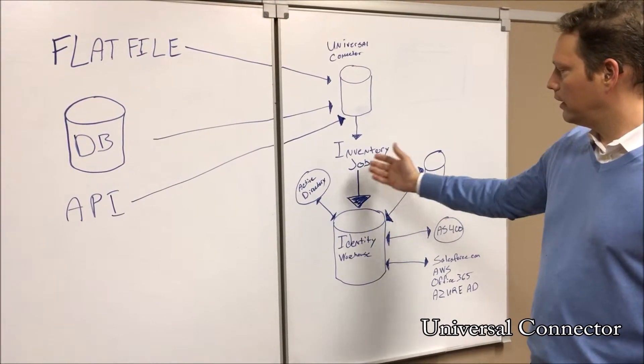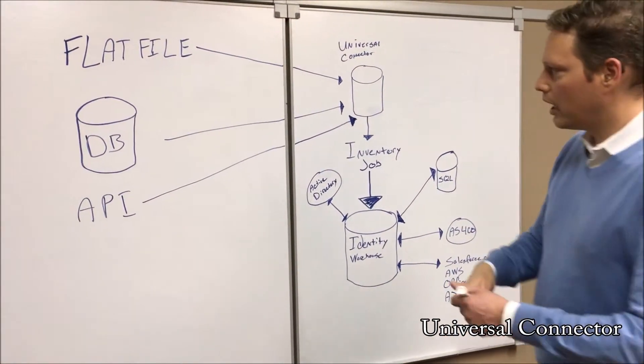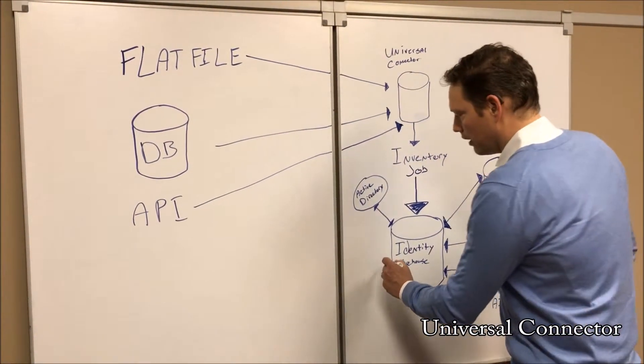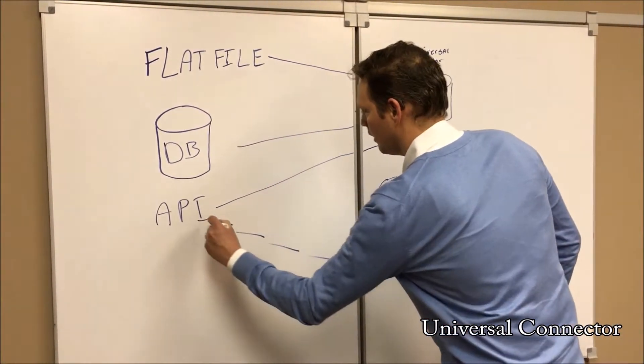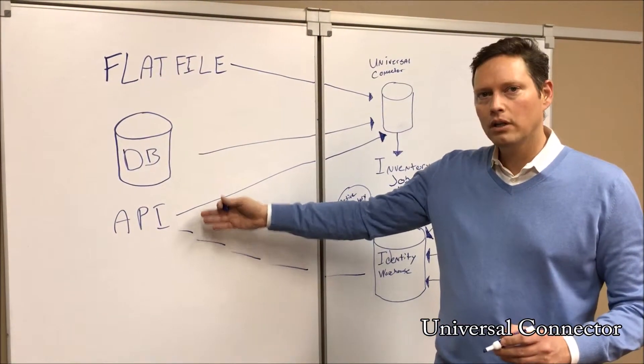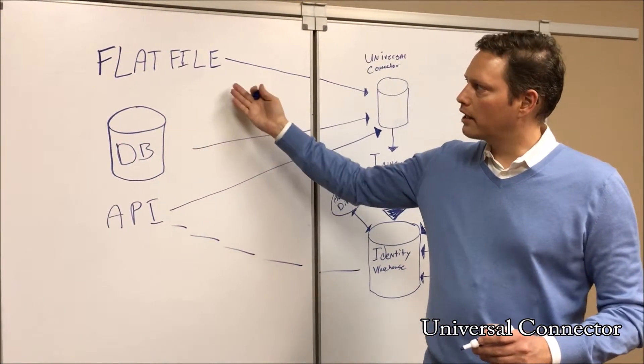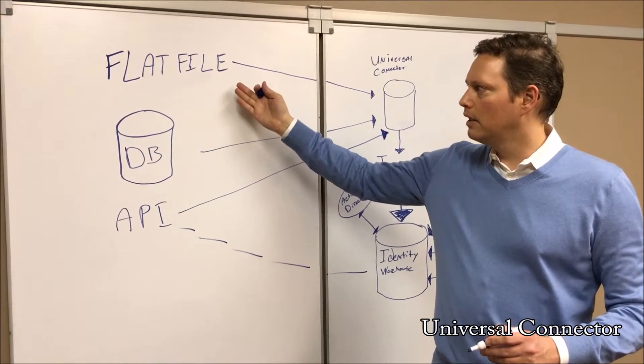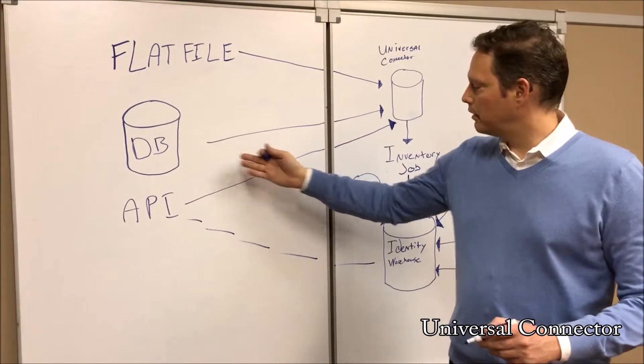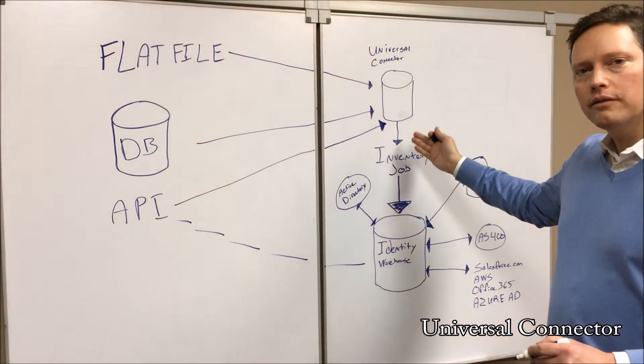Now in the event that you'd like to provision or deprovision back to these systems, it's very easy just to plug in an outbound connection which will talk to that system's API, talk to its database, or export a flat file, CSV, XML. And those systems could then be the recipients of those changes based upon role changes, based upon self-service, to provision or deprovision access.